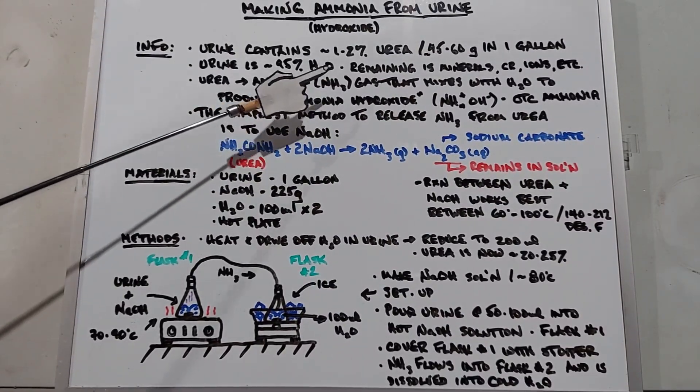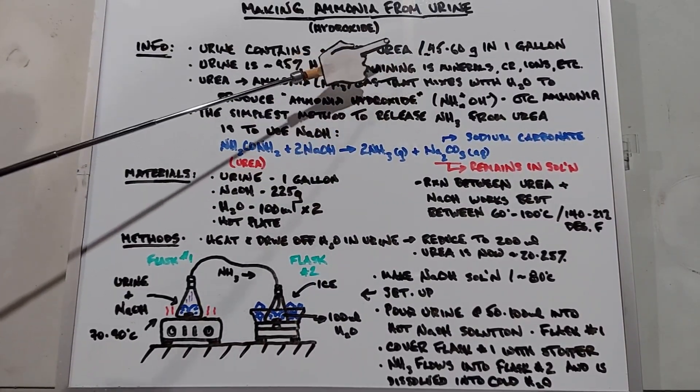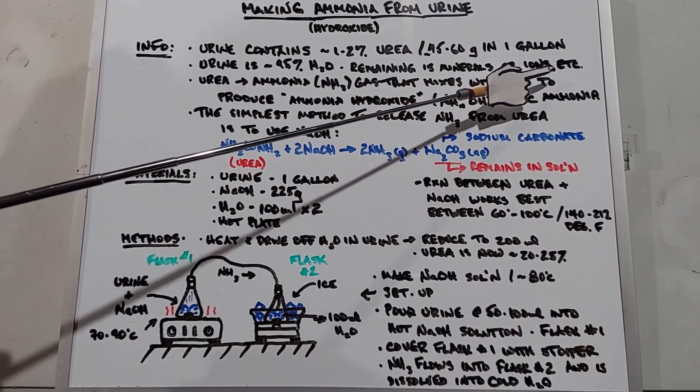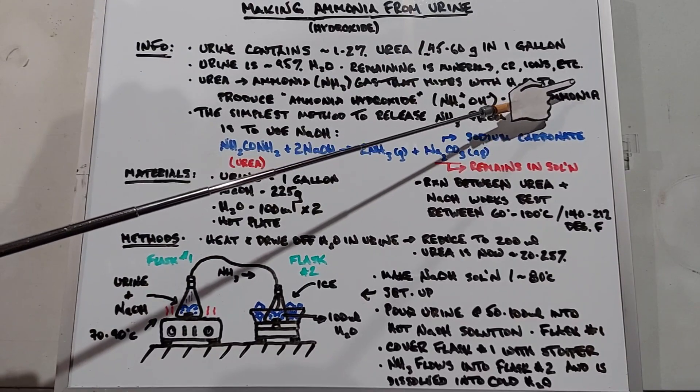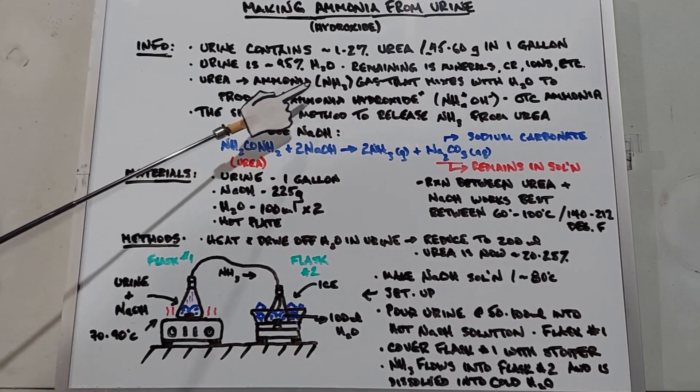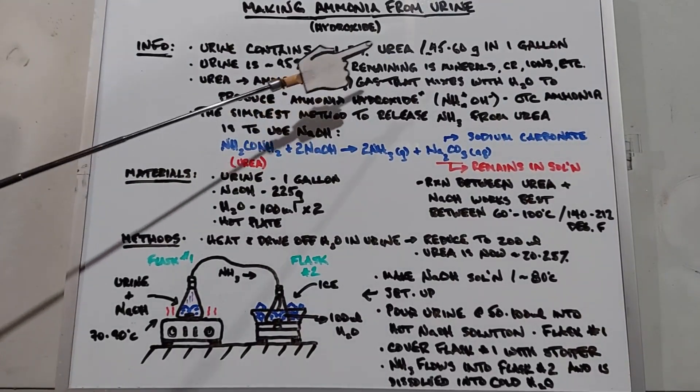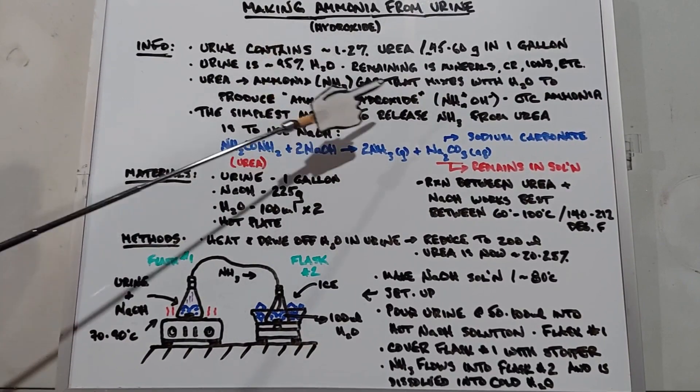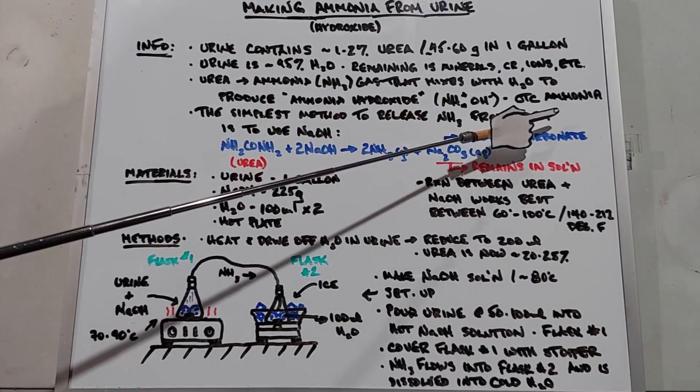Most of urine is water, and the remaining amount between the one to two percent urea and the water are minerals, creatinine, ions, phosphorus, sodium, potassium, etc. You can convert urea into ammonia gas NH3 that mixes with water to produce ammonia hydroxide.